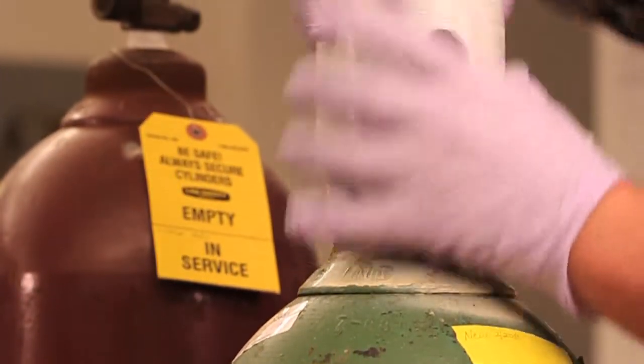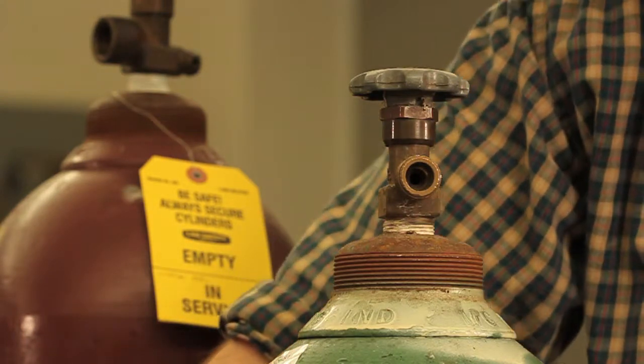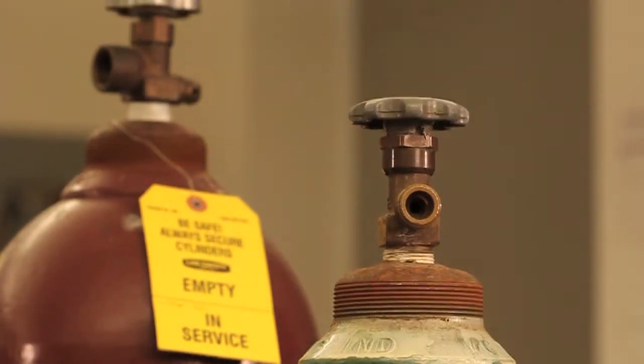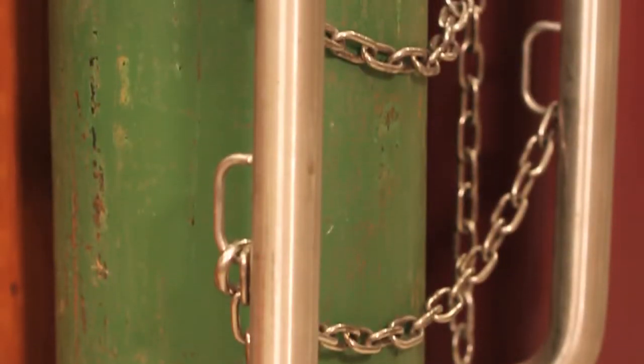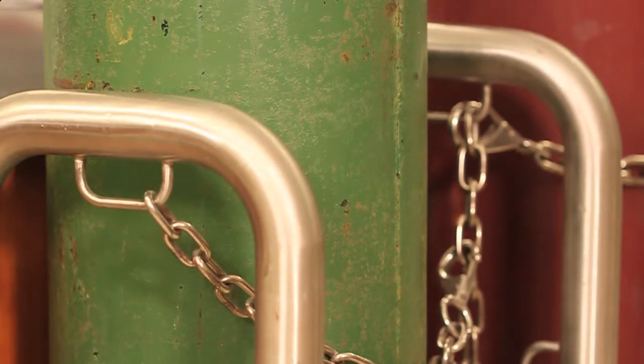First, never move a gas cylinder without the protective cap. This cap screws on and can protect the main valve in the event of falling. If the cap is to be removed, the cylinder needs to be secured so that it cannot fall. In the lab, there are chains to secure the cylinders.